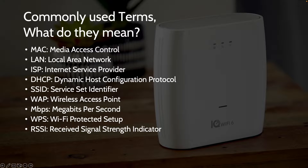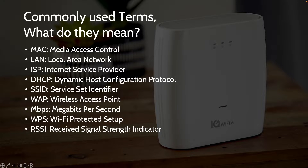Some of you might already have a great grasp on networking and commonly used terms. Like alarm systems, commonly used terms in networking are often abbreviated. MAC, or Media Access Control, is the way one node or device communicates in a network. The LAN, or Local Area Network, is the network inside of the customer's home.